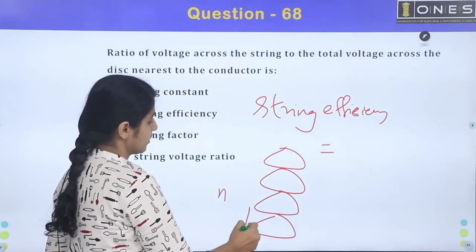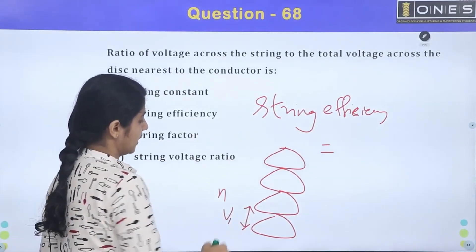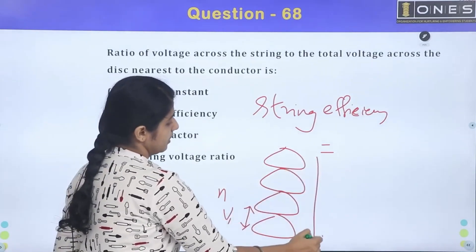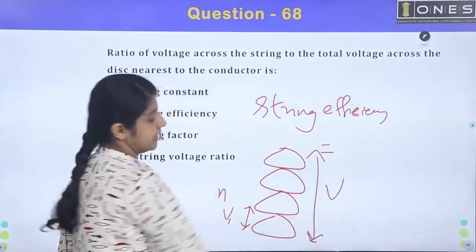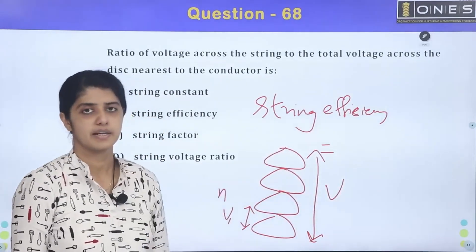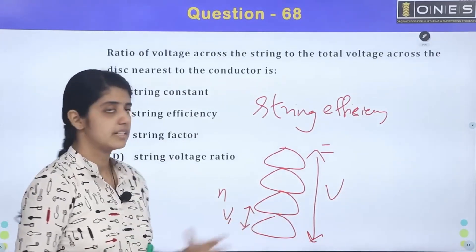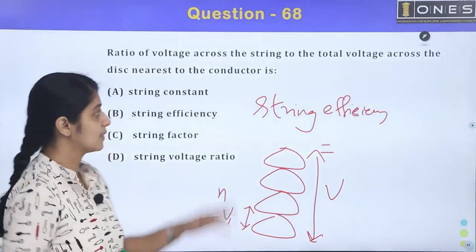The last disc across - the voltage across the last disc is V1. So total voltage is V1. What is the ratio of string efficiency? Total voltage divided by N into voltage of the disk nearer to the conductor. So that is string efficiency.